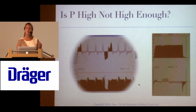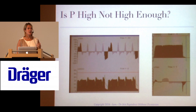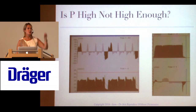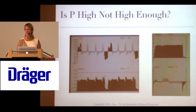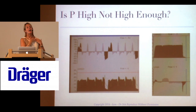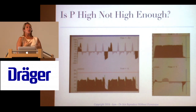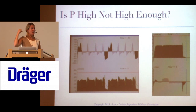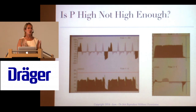The opposite scenario is P high not high enough. In this case, the patient is pulling as much flow as the machine is delivering. You'll see they're using accessory muscles, really pulling and forcefully trying to draw in that volume and flow. You'll be able to see this both on the ventilator and on your patient.